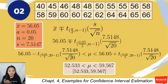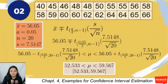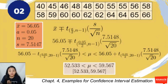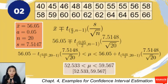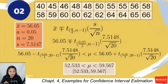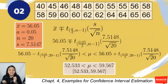Computing the lower and upper extremes gives the final answer: 52.533 < μ < 59.567. Thus, we are 95% confident that the true average weight of all learners in this class is between 52.533 and 59.567.